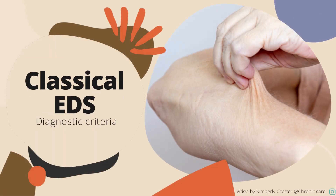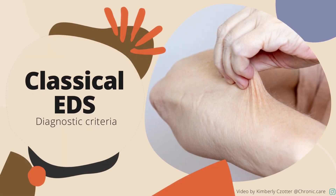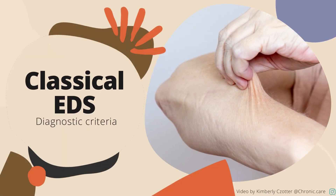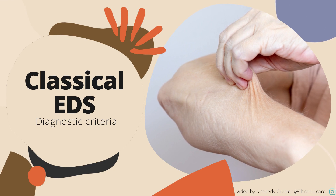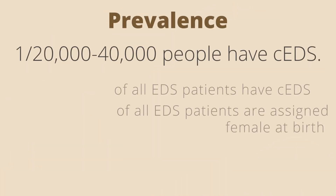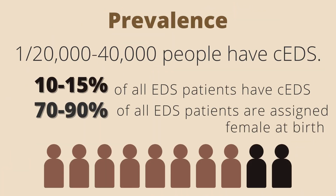This video covers the diagnostic criteria for classical Ehlers-Danlos syndrome, or CEDS. CEDS is rare, affecting 1 in 20,000 to 40,000 people. It is the second most common EDS subtype, with 10 to 15% of all EDS patients having CEDS. Anywhere from 70 to 90% of EDS patients are assigned female at birth.